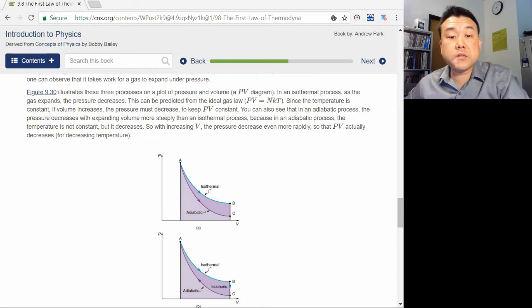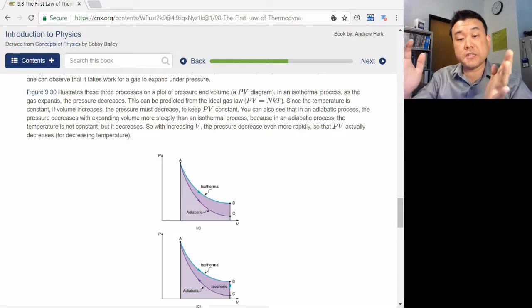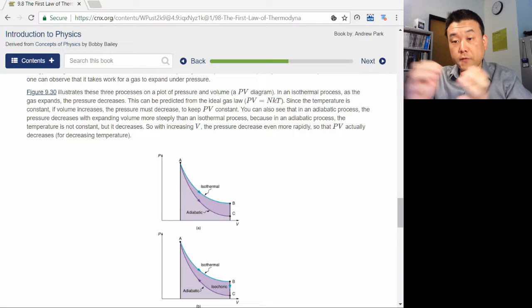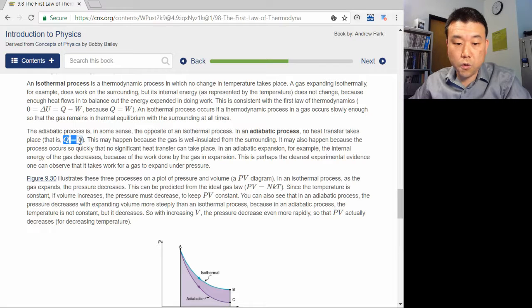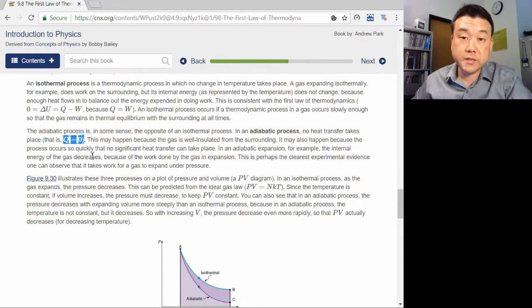But because the gas does work as it expands, work is pressure times the volume change. And in the case of adiabatic expansion, there is no heat flow to provide the energy necessary to do work. So the internal energy decreases, which is reflected in the decreasing temperature.